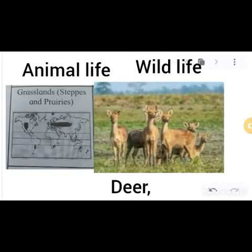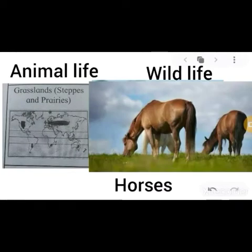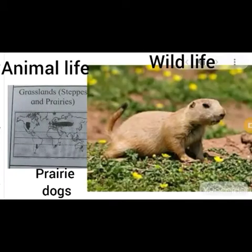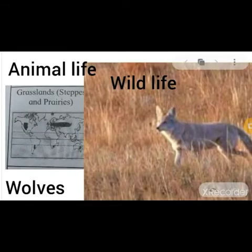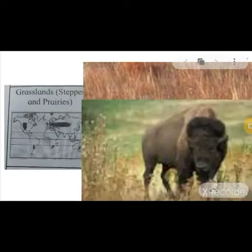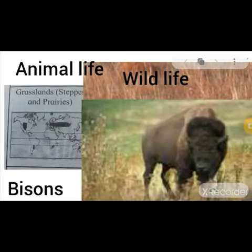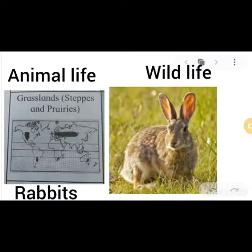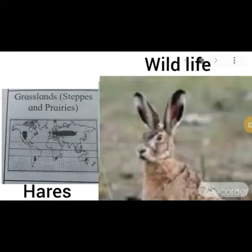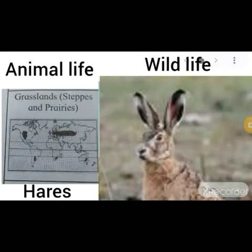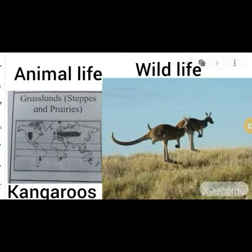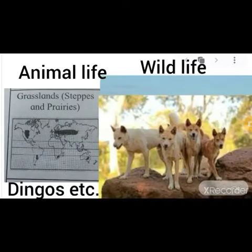Animal life in this natural region includes deer, horses, prairie dogs, wolves — the top predators in the grasslands — bison, rabbits, bears, and kangaroos. Such types of wildlife are found in the steppes and prairies natural region.